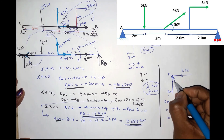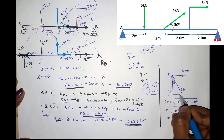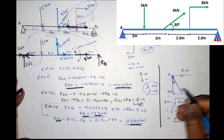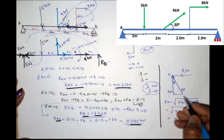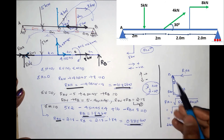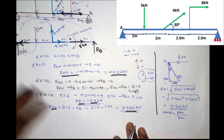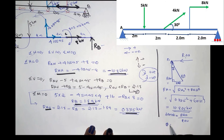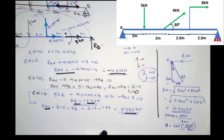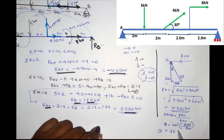RA is the resultant of the horizontal and vertical components. The angle theta of inclination from horizontal is found using tan theta equals RAH divided by RAV. Therefore theta equals tan inverse of RAH over RAV. We substitute the values of RAH and RAV to find theta.